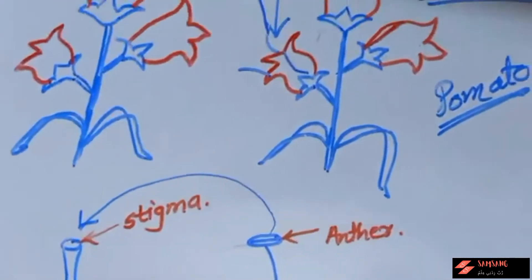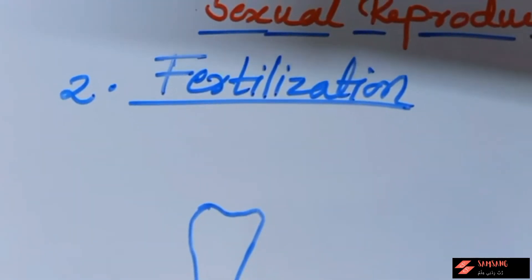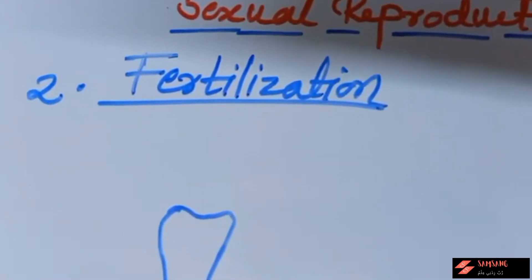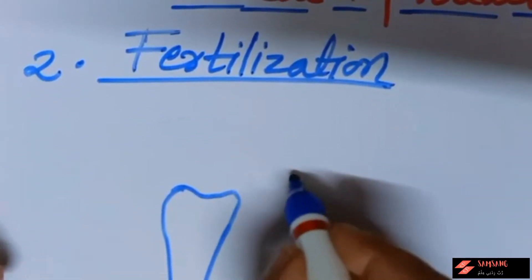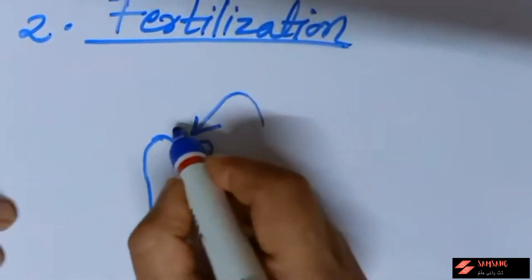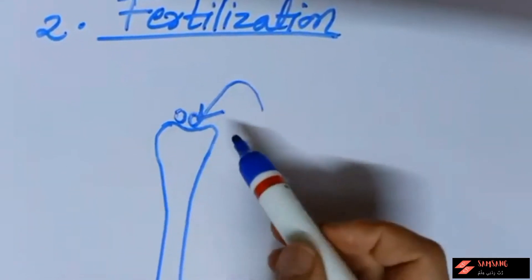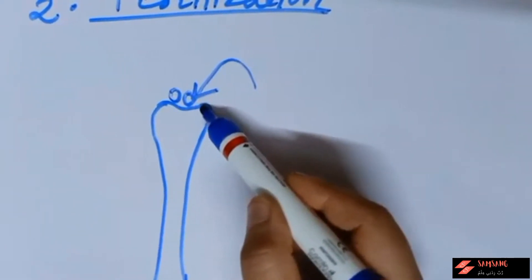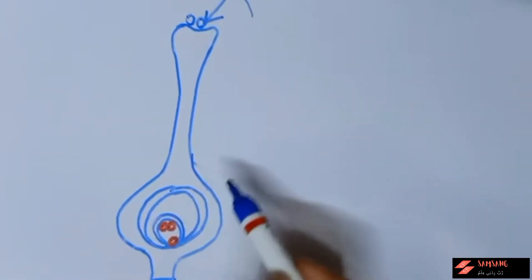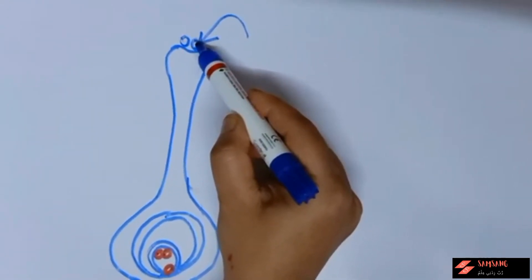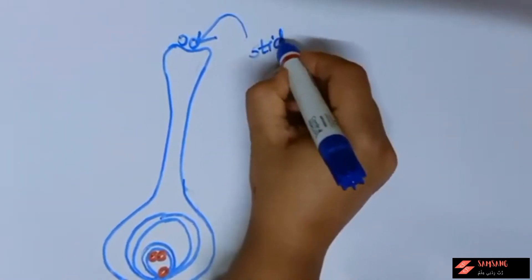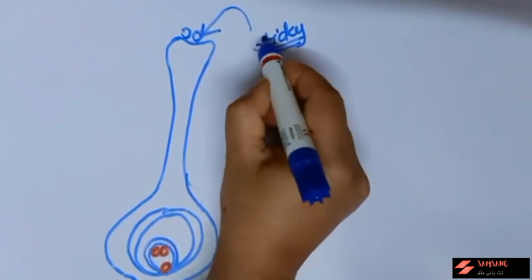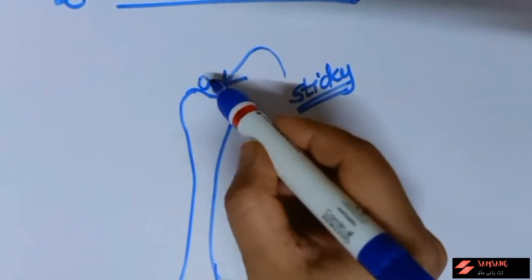The next step after pollination is fertilization. After the deposition of pollen grain on the stigma — the part of carpel — the stigma becomes more sticky. Because of that sticky nature of the stigma, the pollen grain starts to germinate there. So after deposition, there is germination of the pollen grain on the stigma.